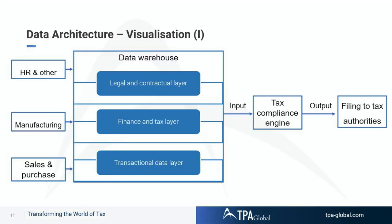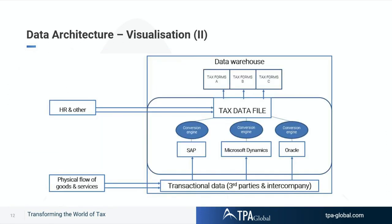The next slide shows a simple version where you have sales and purchase data, manufacturing data, HR and other. You have a transactional layer, a finance and tax layer, and a legal and contractual layer — and they can feed the relevant portions of data for your tax compliance engine to be converted into filings, tax reports, and filings with tax authorities.